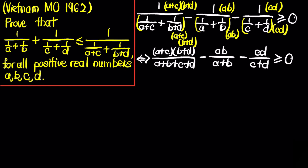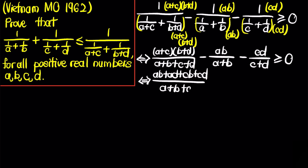Now let's expand the numerator: (ab + ad + cb + cd)/(a+b+c+d) minus ab/(a+b) minus cd/(c+d).